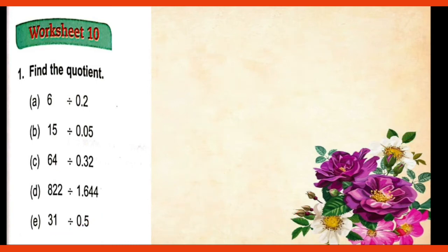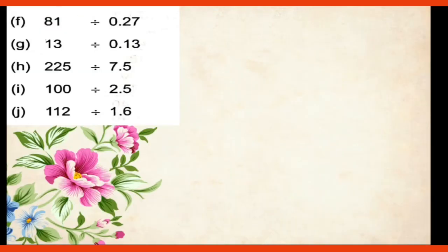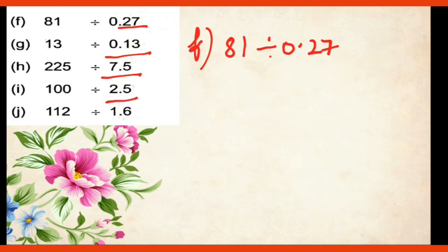E part you will do yourself. Then the next is F part 81 divided by 0.27. All our divisors are given in decimal number. When your divisor is in decimal, you will do it by this method. As we used in worksheet 9 and worksheet number 10 same method we have opted. We have not used long division method. Long division method you will only use when your divisor is whole number, not decimal number.